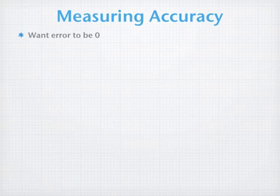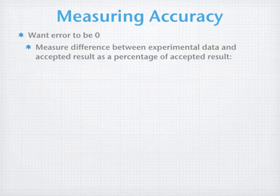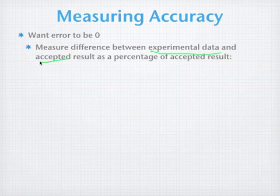We're going to be measuring accuracy in our class and we're going to want our error to be as close to zero as possible. In other words, we're going to be measuring the difference between the experimental data, which is what you take, and the accepted result or the accepted values or the actual values. And we're going to be using a percentage of the accepted result as our guide point. Now, I should say we're not going to be measuring precision in terms of the spread in the data or groups of measurements only because that tends to be a little bit more sophisticated than we want to get into.